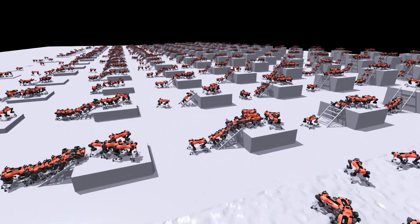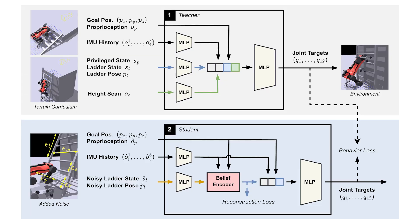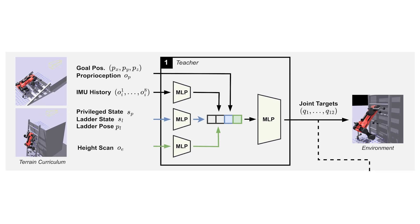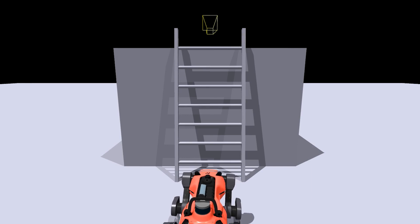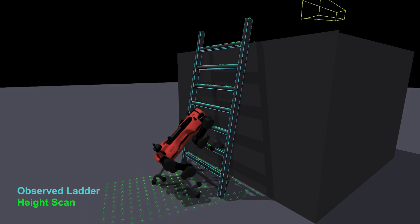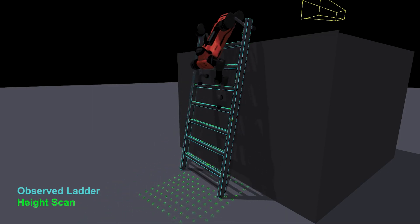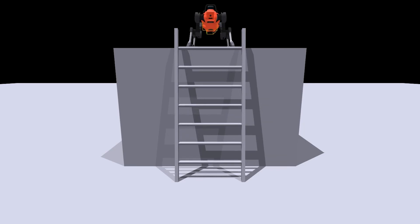Then, we trained a control policy in simulation using a privileged teacher-student reinforcement learning approach. The teacher has access to privileged observations only available in simulation, including noiseless position and orientation of the ladder, external disturbances, and other information which helps to learn robust ladder climbing.